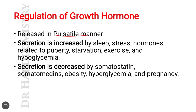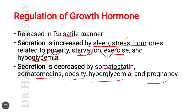Growth hormone is not secreted in large quantities but secretion is pulsatile. Secretion is increased by sleep, stress, hormones related to puberty, starvation, exercise, and hypoglycemia — all these factors increase secretion of growth hormone. Secretion is decreased by somatostatin, somatomedins, obesity, hyperglycemia, and pregnancy.